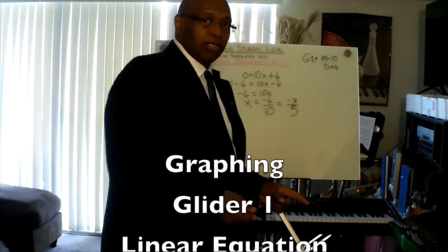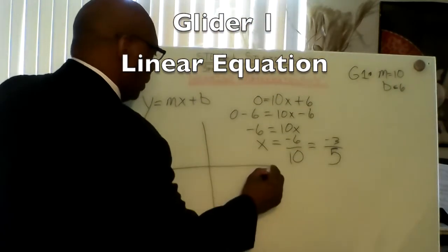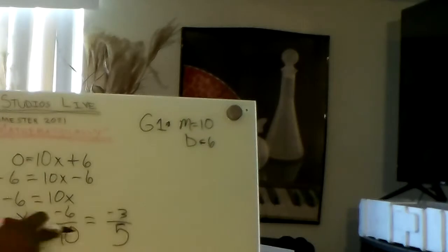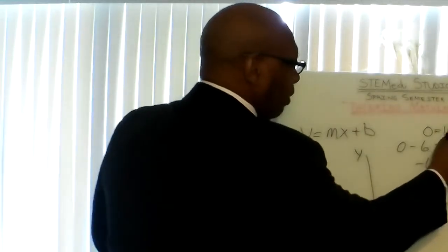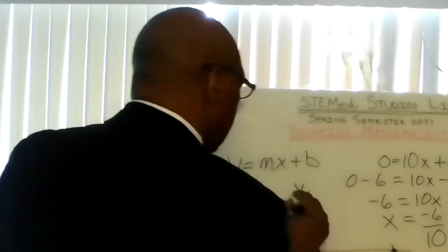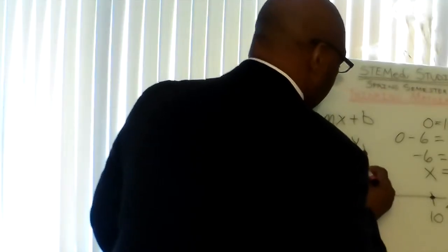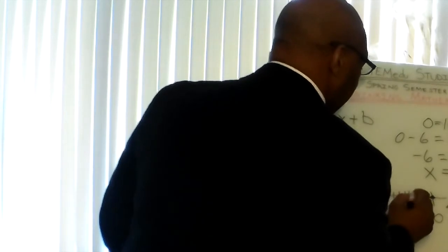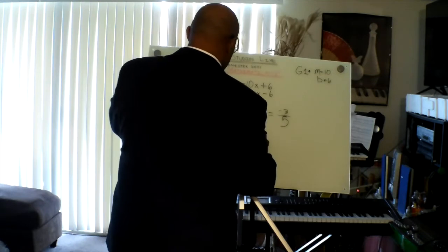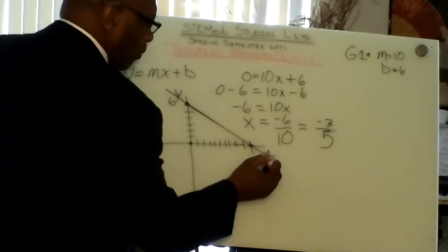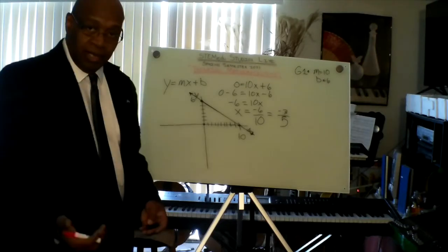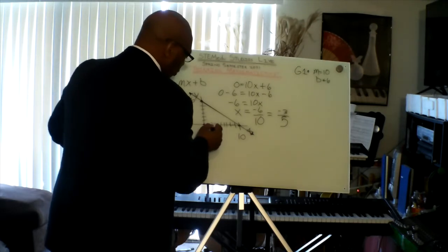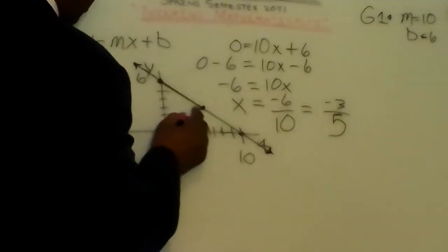Let's draw a graph using this equation. The y-axis and x-axis — marking 1, 2, 3, 4, 5, 6 on both axes up to 10. Let's connect these two points. Looking at Glider 1 flat coordinates, we go down 3 and over 5.